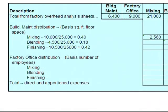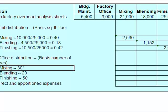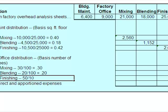Let's look at how we're going to distribute factory office — we're going to do it based on the number of employees. Mixing has 30, blending has 20, finishing has 50, which is great because it means I have 100 people total. So mixing is 30 out of 100, which is 30%; blending divided by 100 gives 20%; and finishing 50 out of 100 gives 50%.